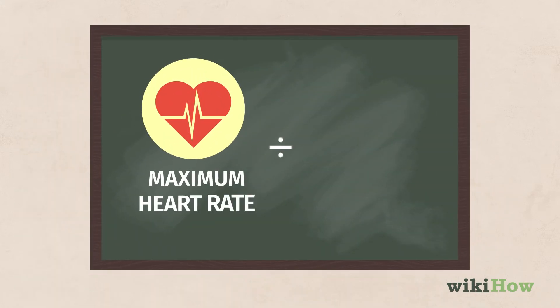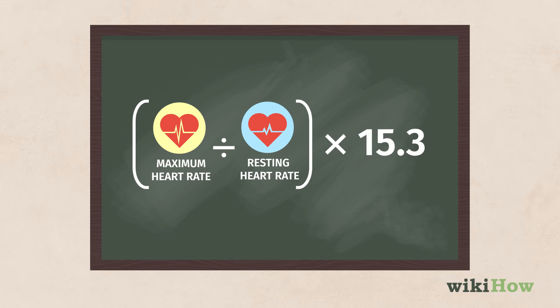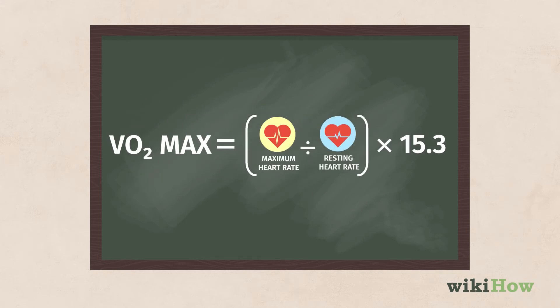Divide your maximum heart rate by your resting heart rate, then multiply the result by 15.3 to get your VO2 max.